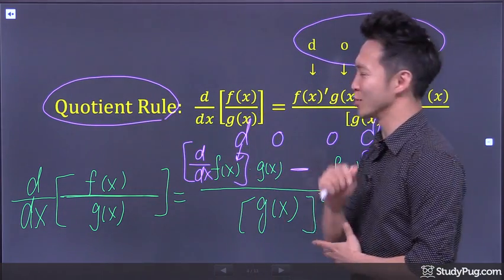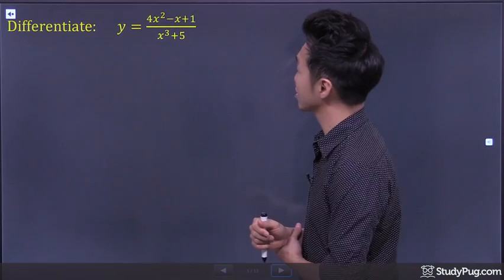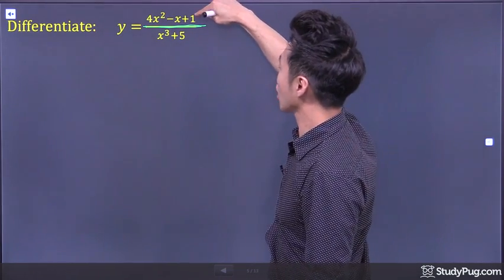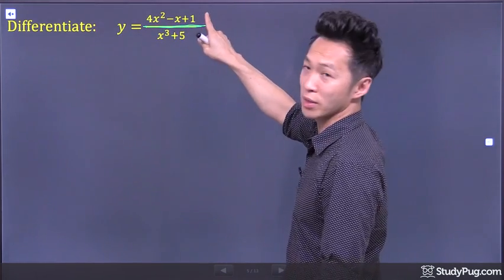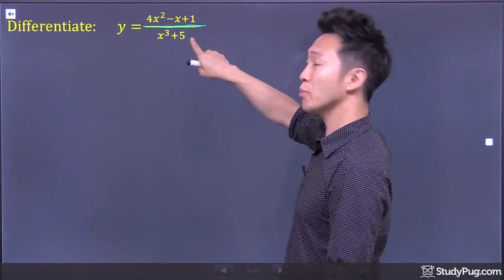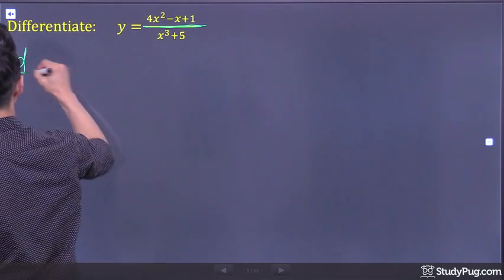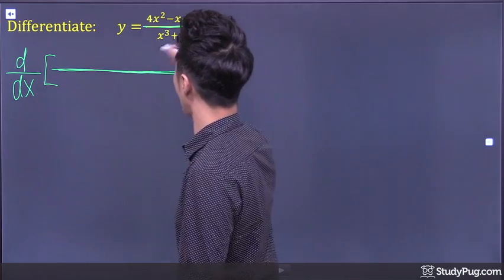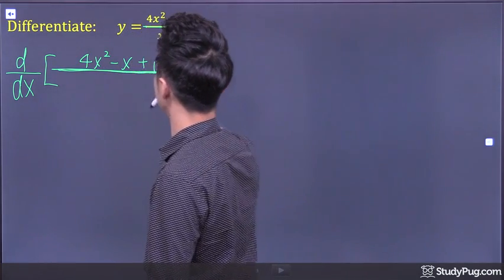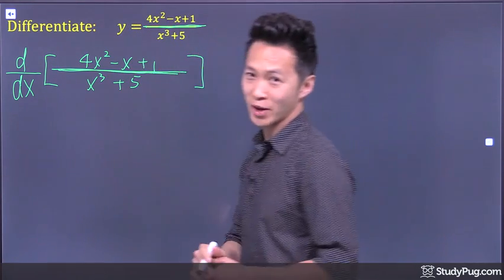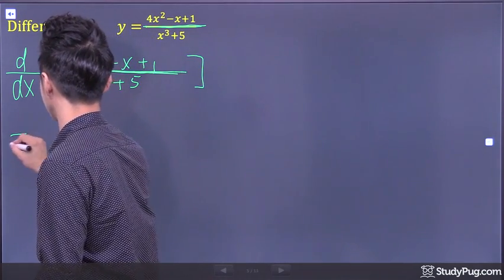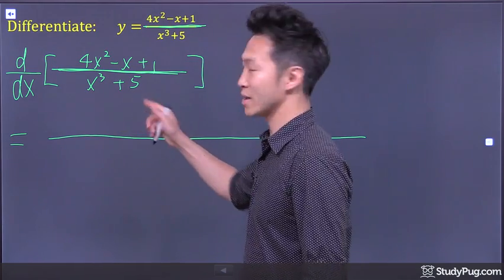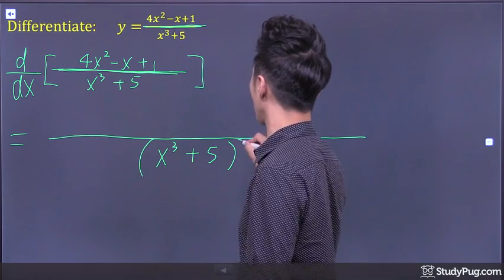Now is the time to put the quotient rule to good use. In this question, we are differentiating the function y equal to a fraction — the quotient of two functions. At the numerator we have the polynomial 4x squared minus x plus 1, and at the denominator we have x cubed plus 5. So to find the derivative, I first simply square the bottom guy for the denominator: x cubed plus 5, squared. Done — we're done for the denominator.